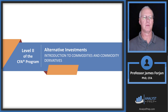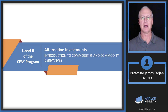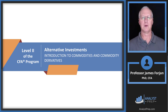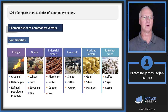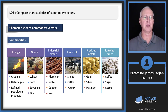This is Level Two of the CFA program, the topic on alternative investments and the reading on introduction to commodities and commodity derivatives. There are two parts to the reading, and we want to skip ahead to the first LOS: compare characteristics of commodity sectors.